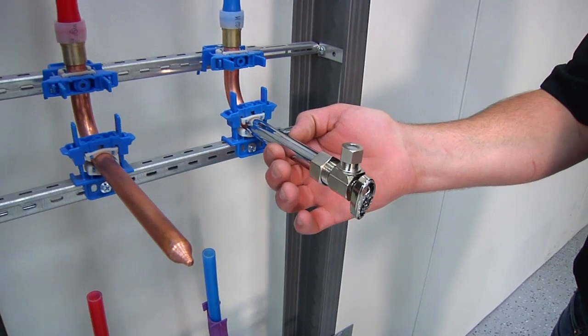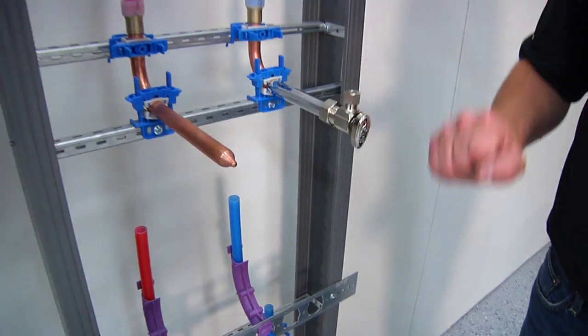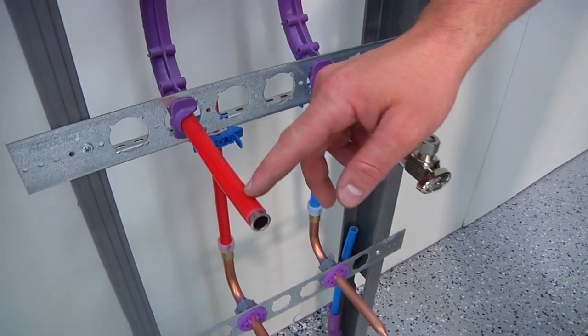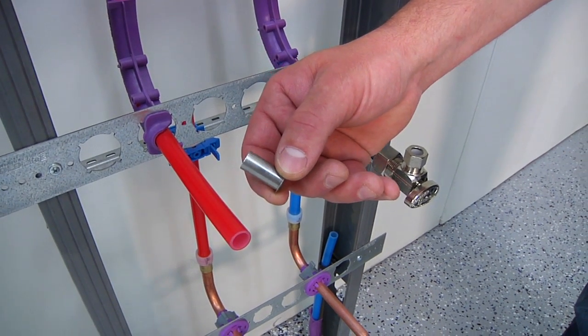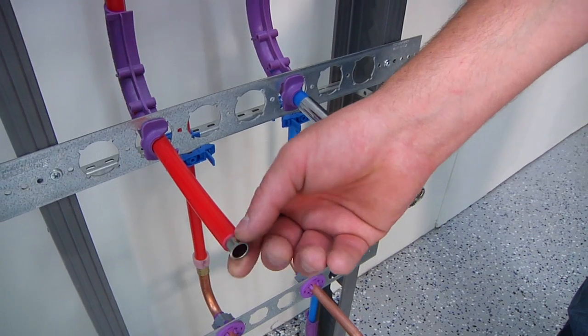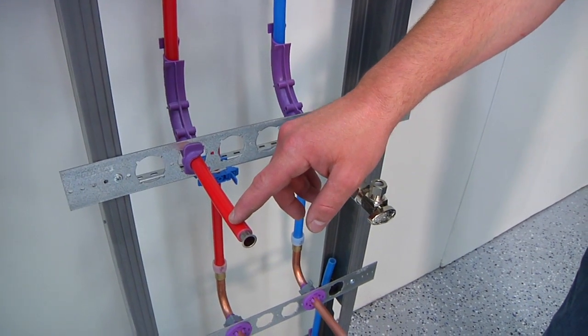This would be Uponor's chrome sleeve. When we're using that type of stop valve, a compression valve on a PEX pipe, we want to make sure we're using the insert stiffener. This is stainless steel offered by Uponor. It ensures that the ID does not collapse under compression.